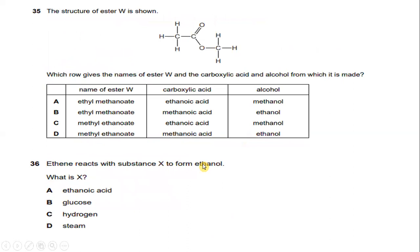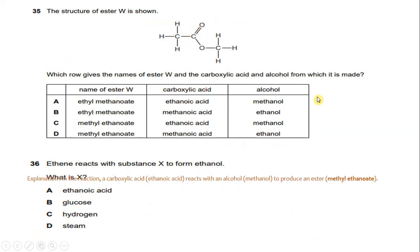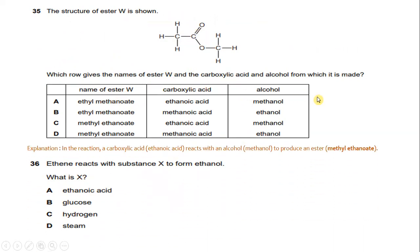The structure of Ester W is shown. Which are the name of Ester W and the carboxylic acid and alcohol from which it is made? In this reaction, ethanoic acid reacts with methanol to produce the ester called methyl ethanoate. The answer is C.